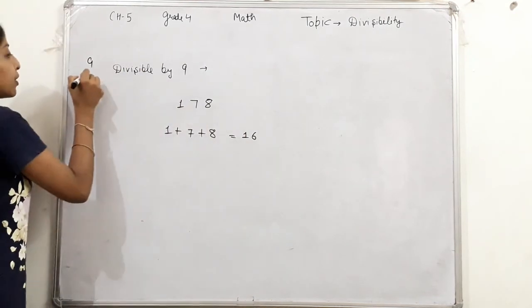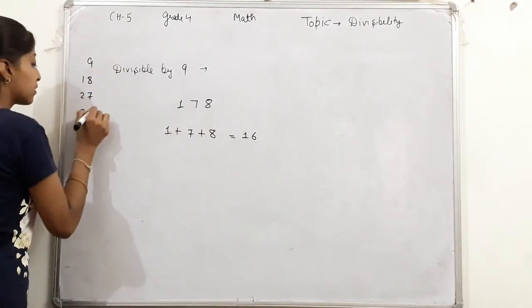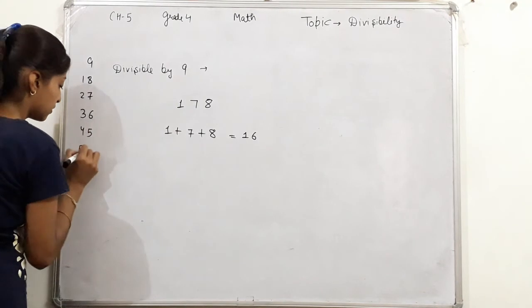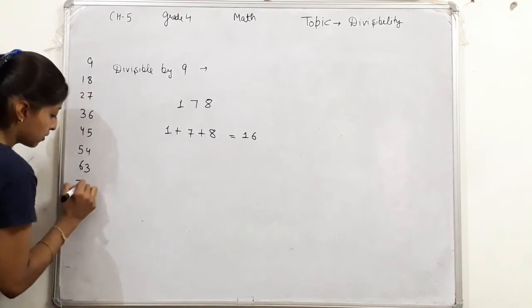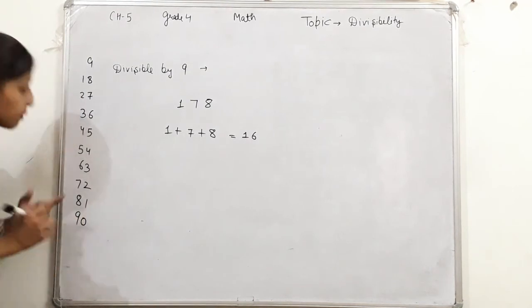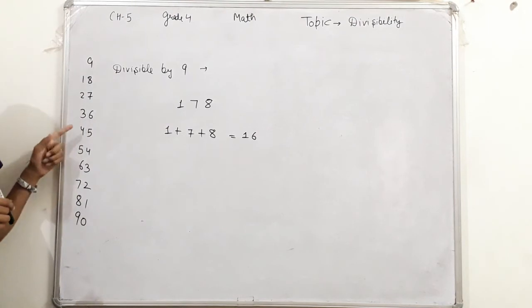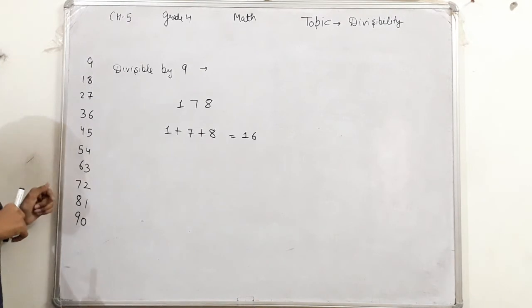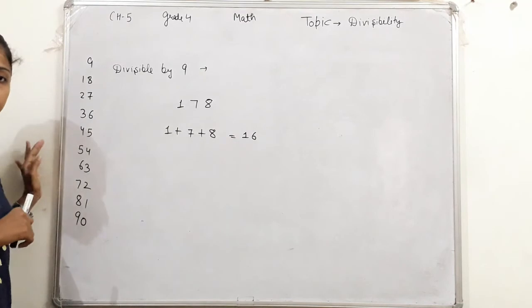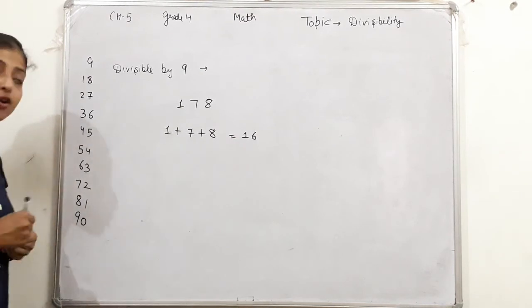Let me write the 9's table. 9 ones are 9, 9 twos are 18, 9 threes are 27, 9 fours are 36, 9 fives are 45, 9 sixes are 54, 9 sevens are 63, 9 eights are 72, 9 nines are 81, 9 tens are 90. We got 16 here. So this number won't divide by 9. You can check by dividing also.